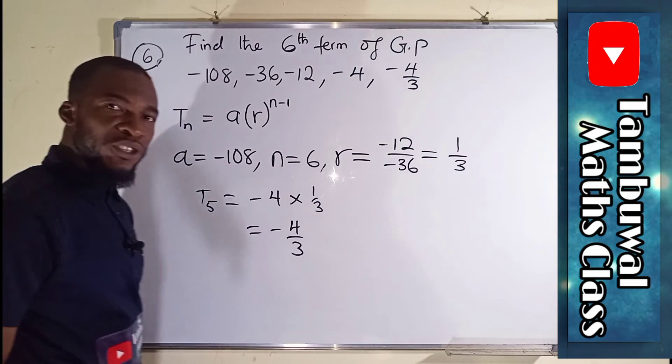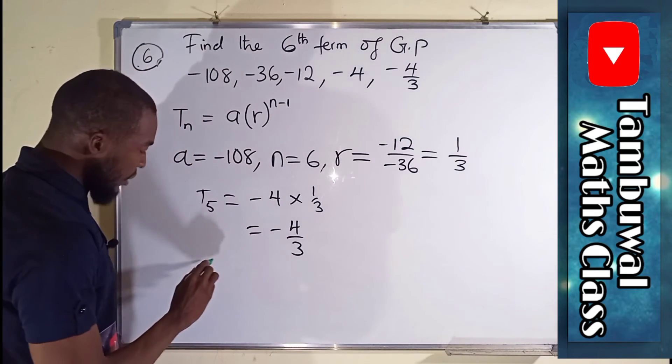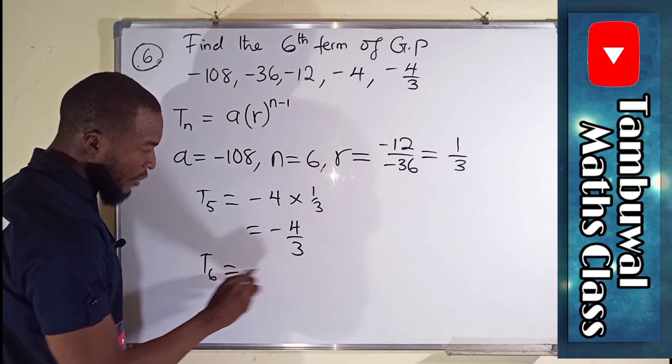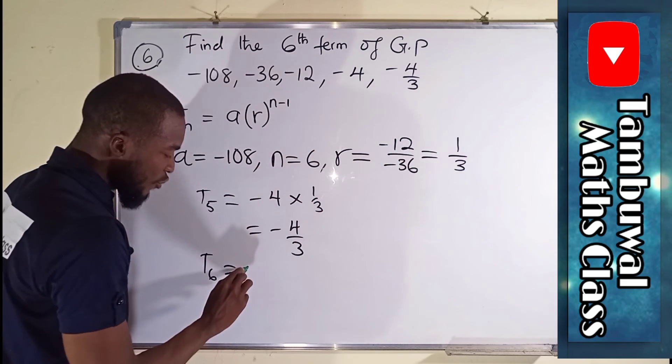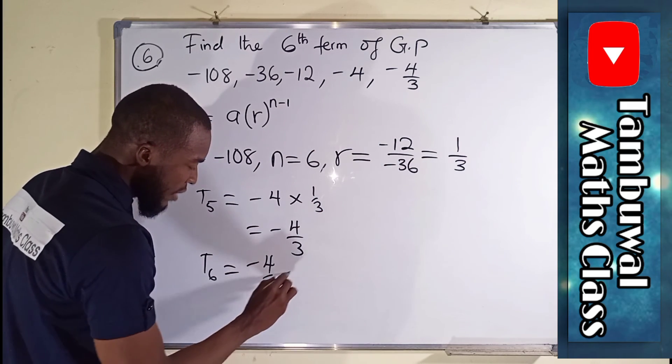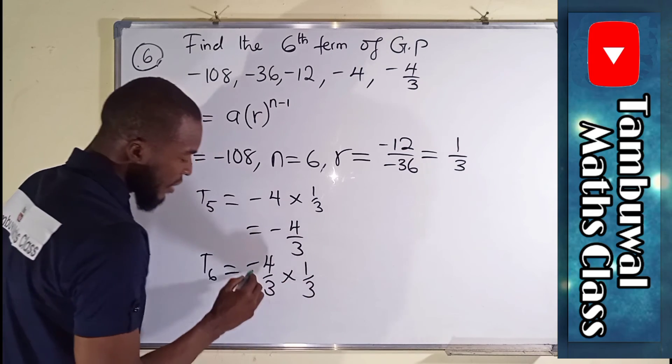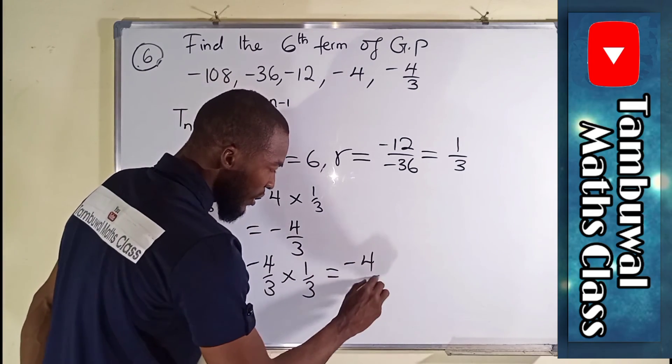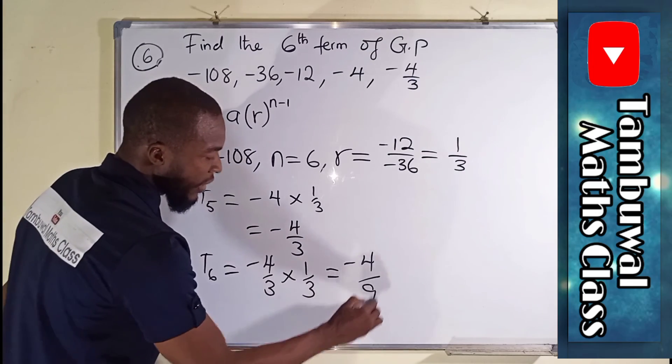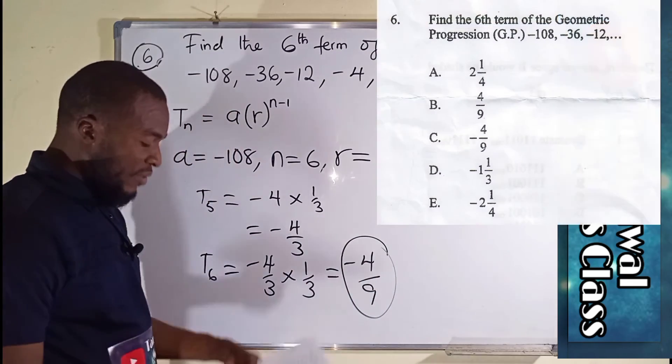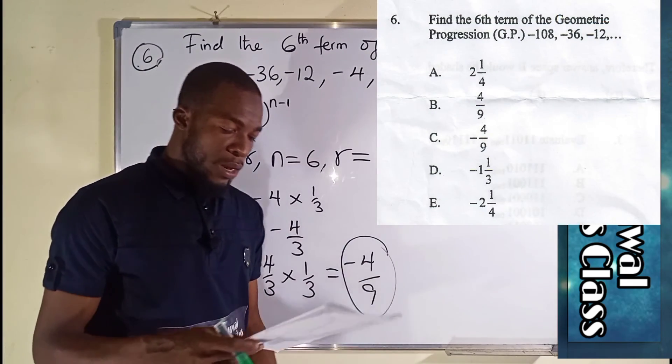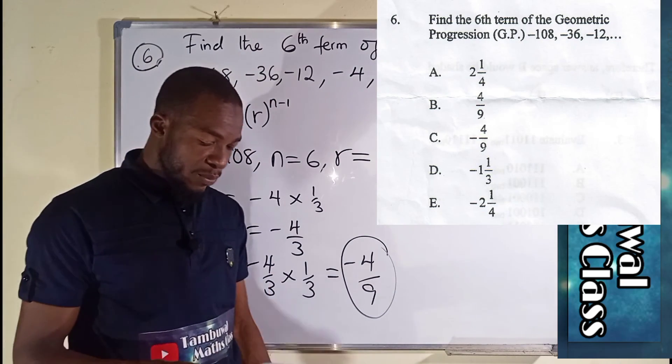And to obtain the term, which is the required term, T6, as required, you take this, you multiply by the common ratio, minus 4 over 3 times 1 over 3, negative 4 times 1 is negative 4, and 3 times 3 is 9, as required, which is the option C. Now let us look on to question number 7.